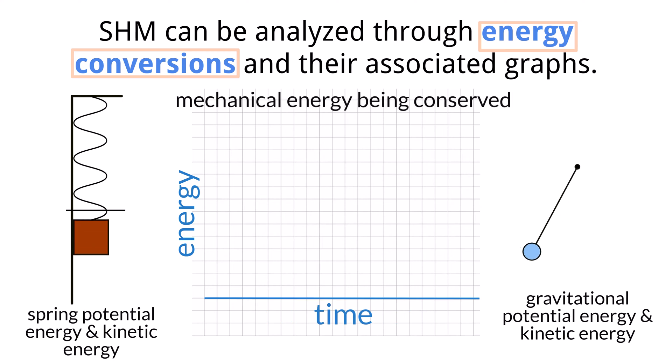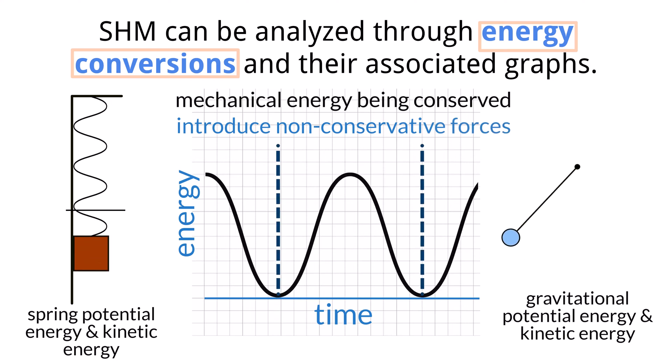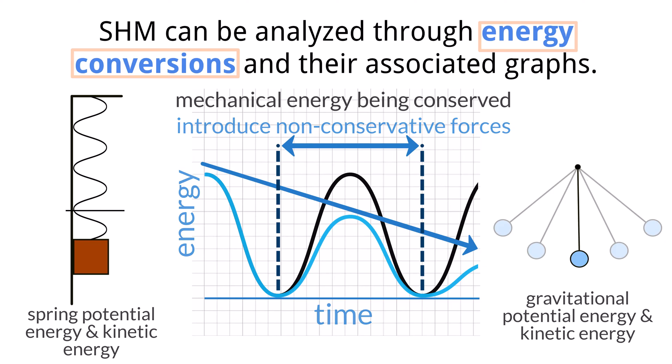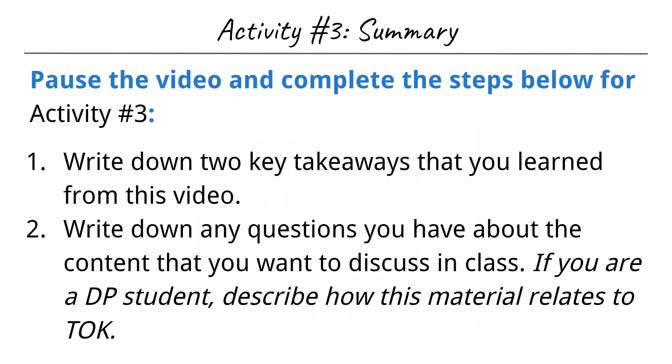All of this deals with the simplest case of mechanical energy being conserved, but it's not too difficult to see what would occur if we were to introduce some non-conservative forces. As with all non-conservative forces, they remove mechanical energy from the system, which would result in a steady drop in amplitude of the system and all associated graphs. However, you'll notice that the period does not change, as we've already seen what factors affect the period of each system, so it would remain steady unless one of those factors is altered.